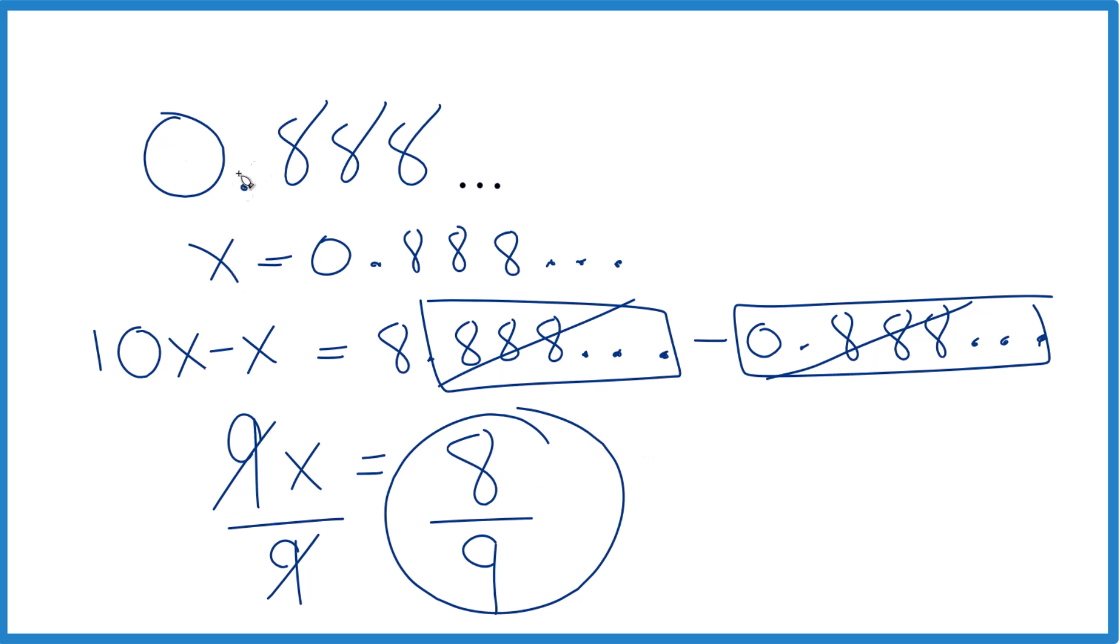So when you have 0.8888 repeating, you can convert that to a fraction, and that's going to be 8/9. It's an involved process. Maybe give it a try yourself. And if you have problems, come back and watch the video again. It's Dr. B.C.